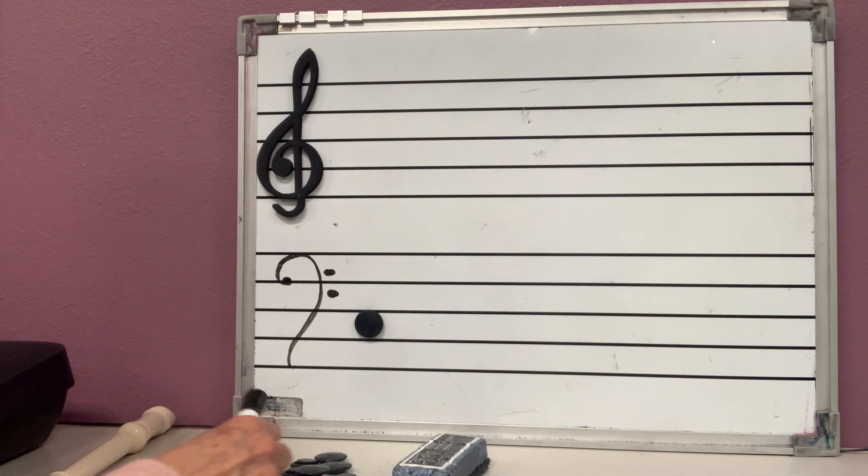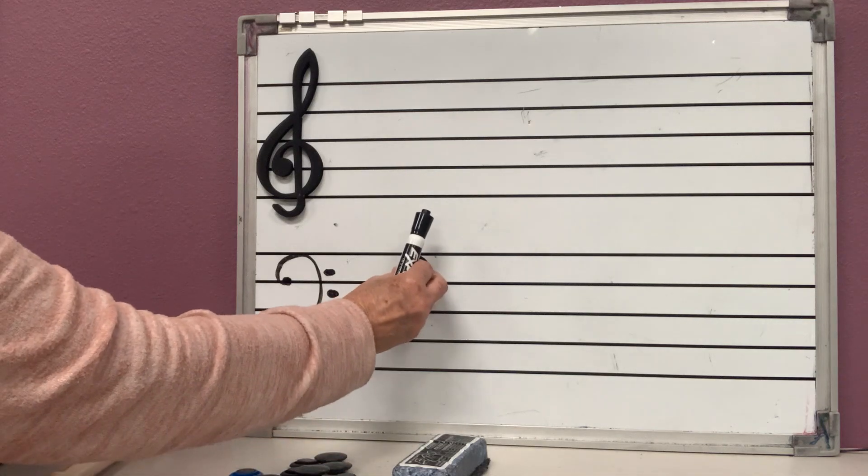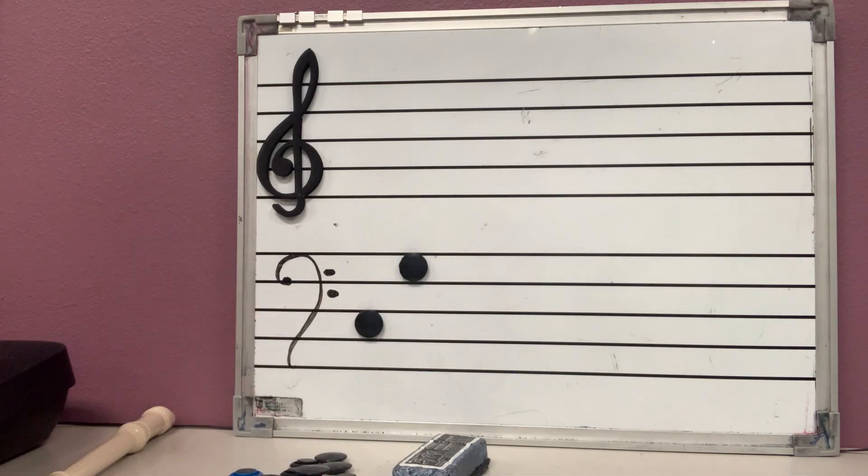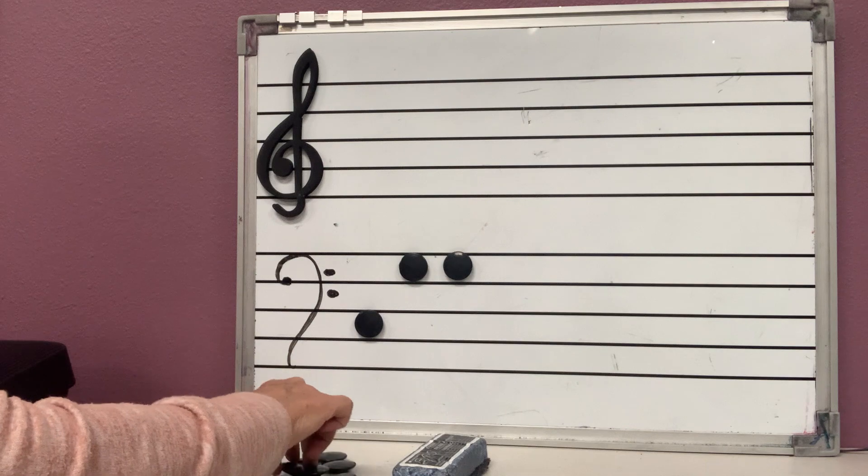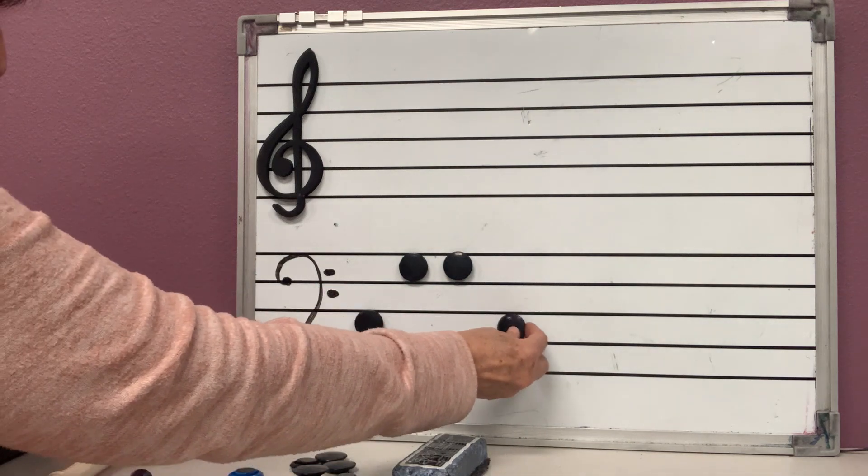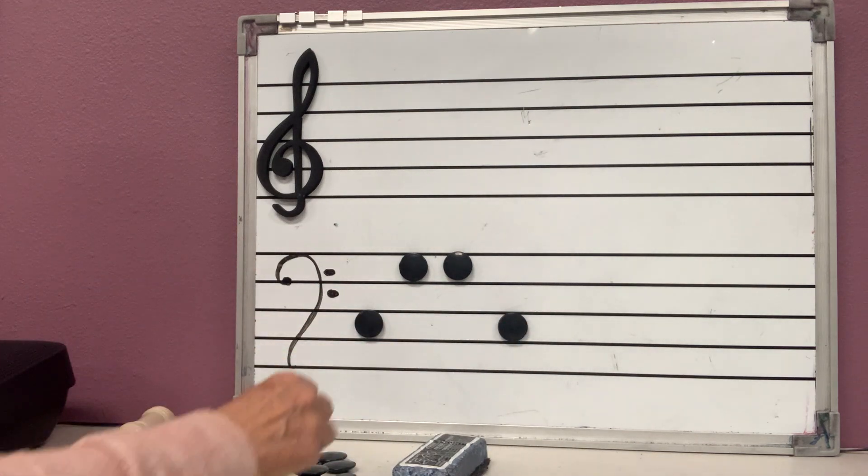But this one is going to be C, cows, and this one is going to be G. Cows, grass. So just tell me if it's a cows or a grass. Grass, grass. G. Cows, cows. C.